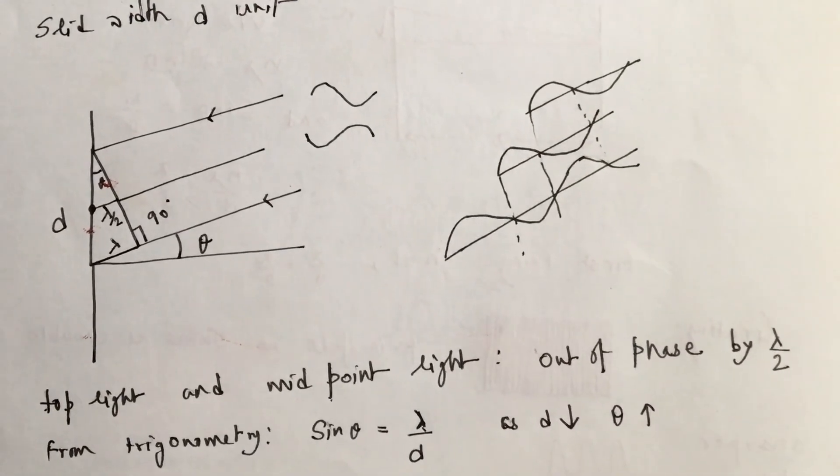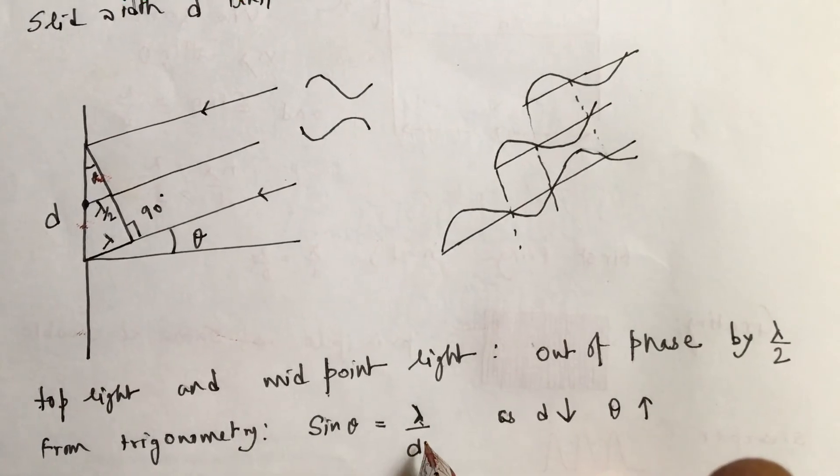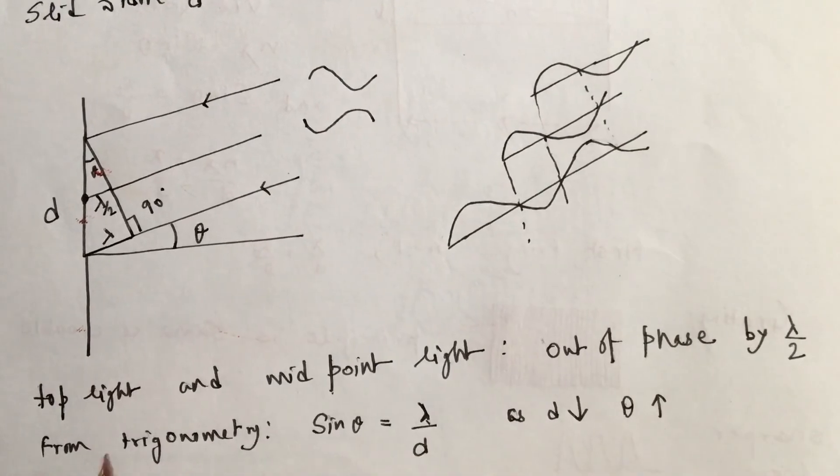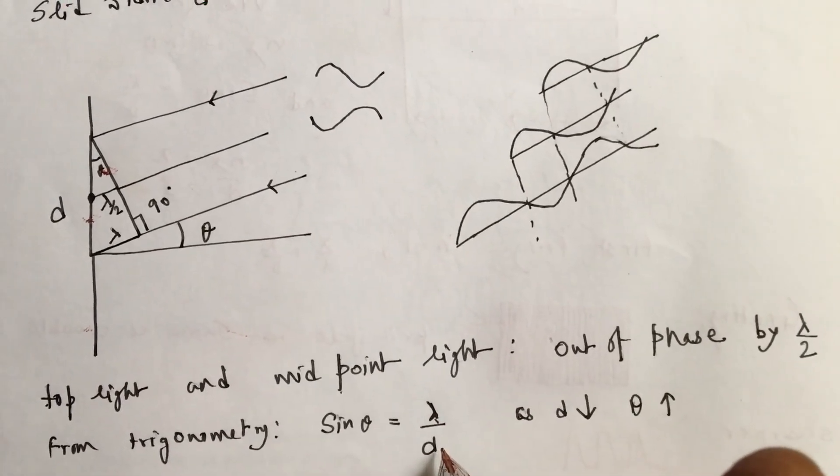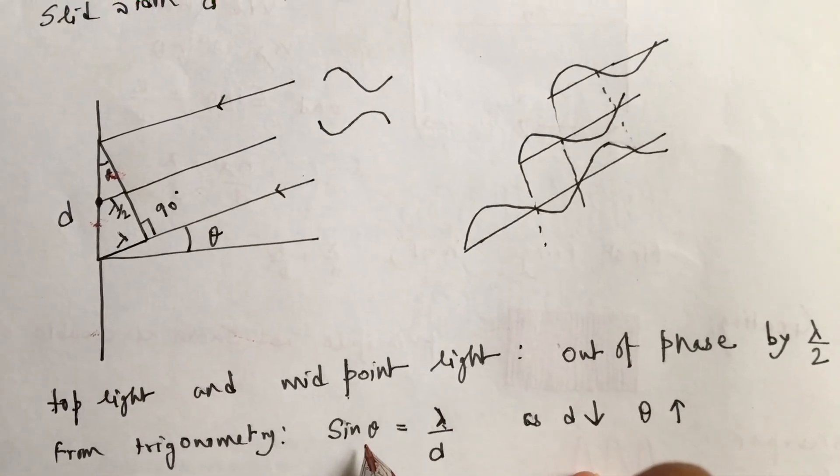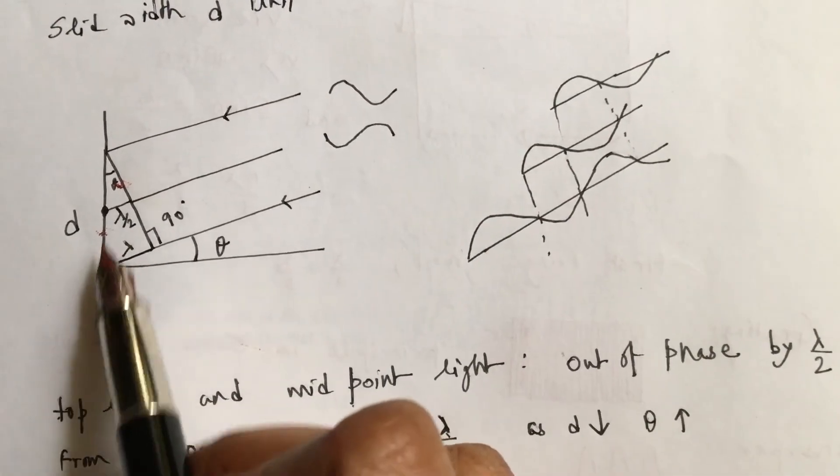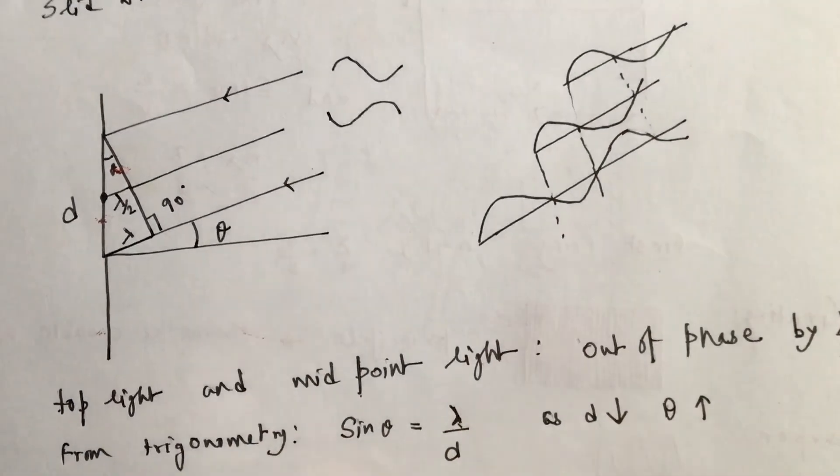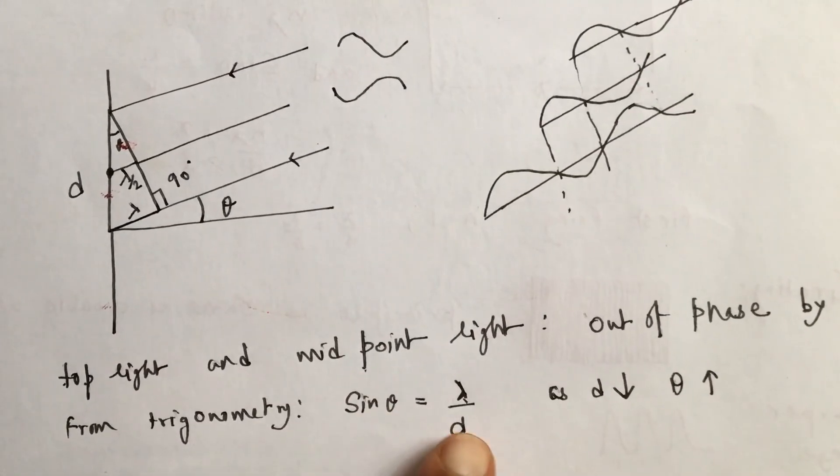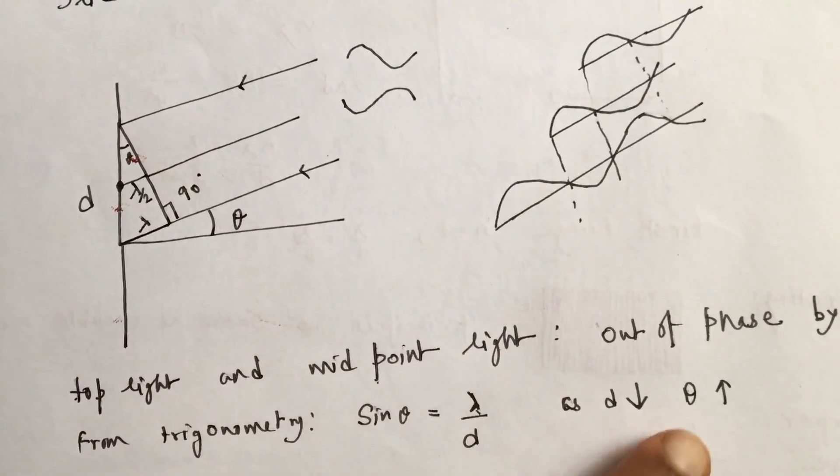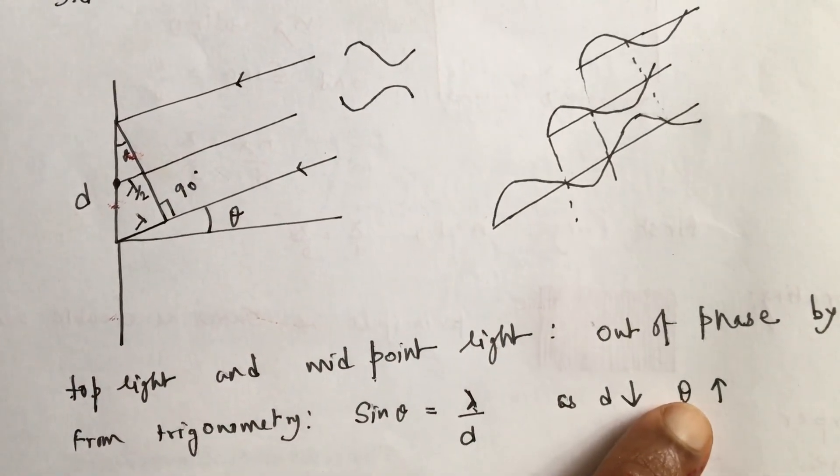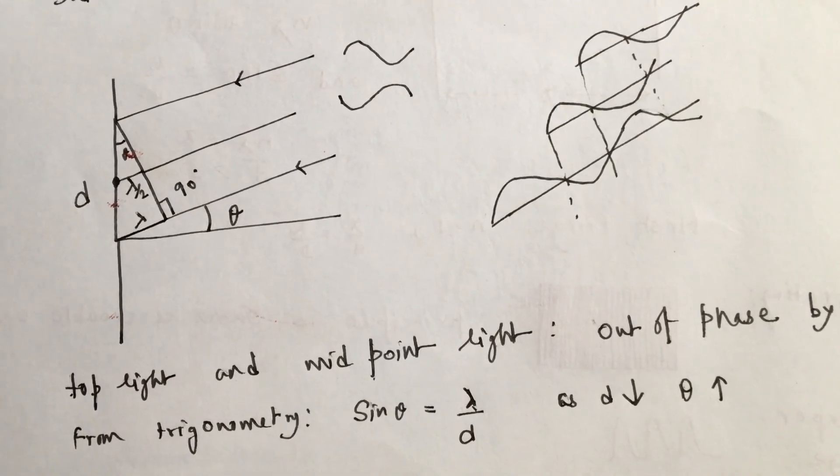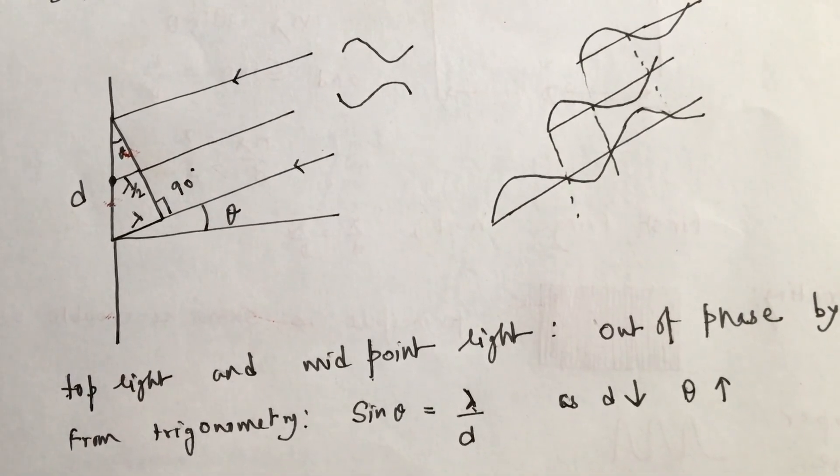From geometry we have proved that sine theta equals lambda by D. If D, the slit width, decreases, then sine theta has to increase. That means if we decrease the width of the slit, the angular spread gets better. The relation shows that if slit width decreases, angular spread increases.